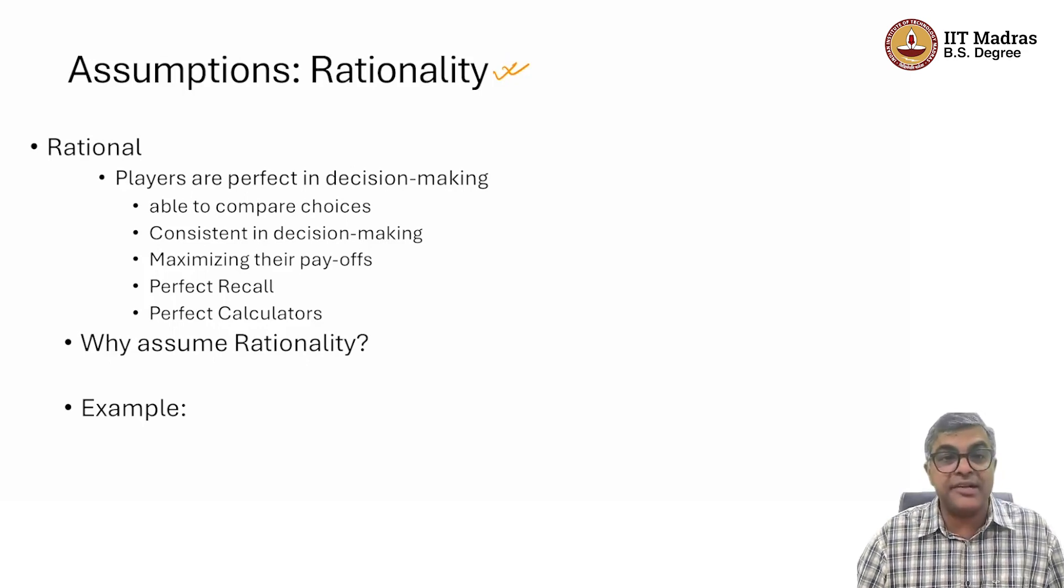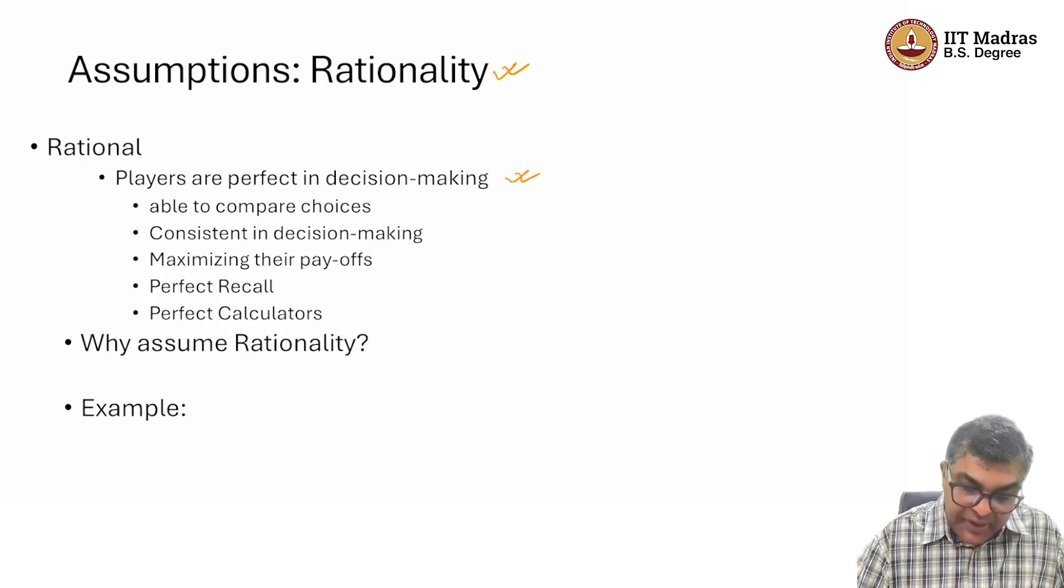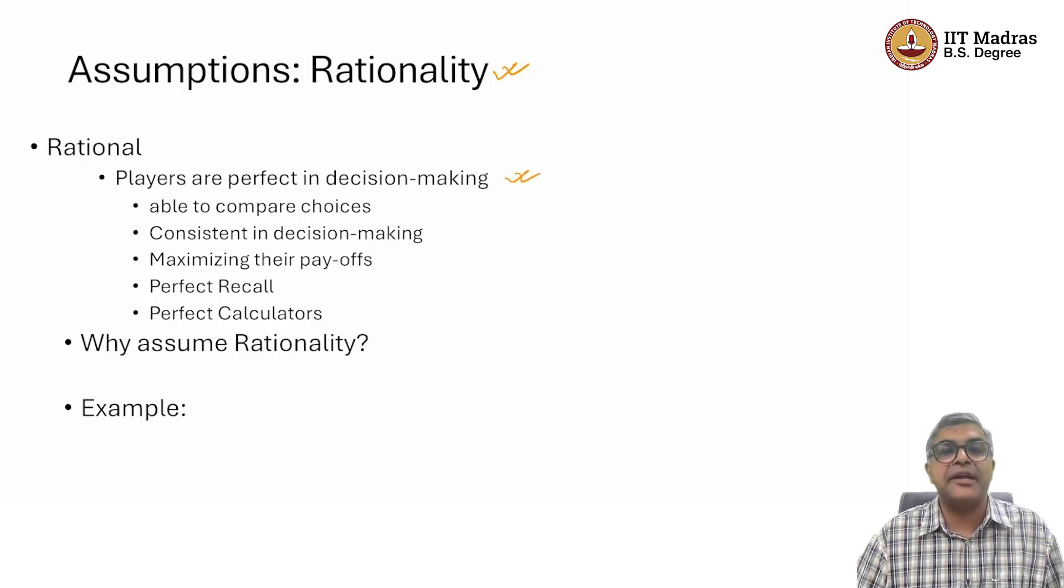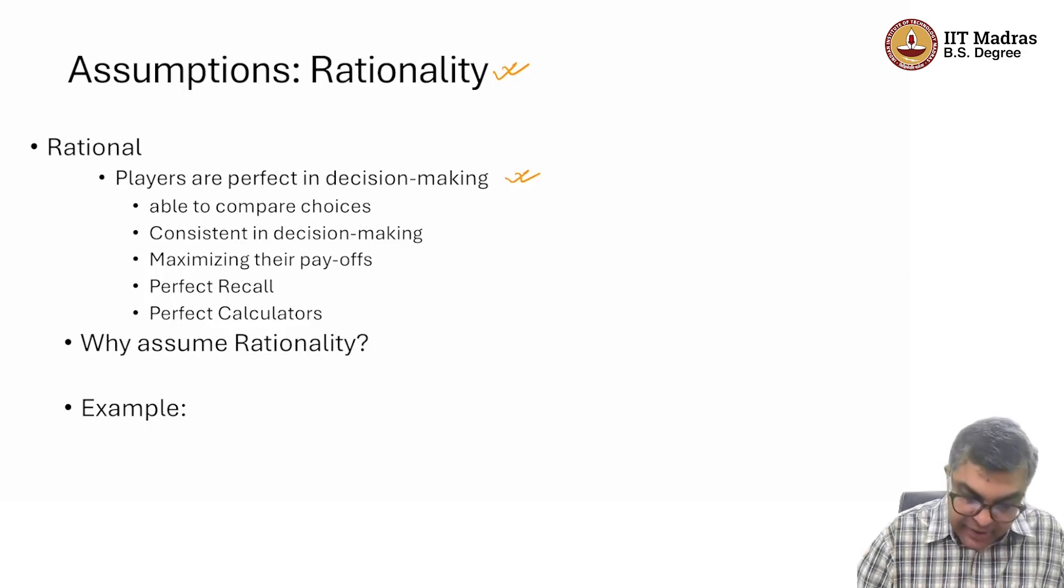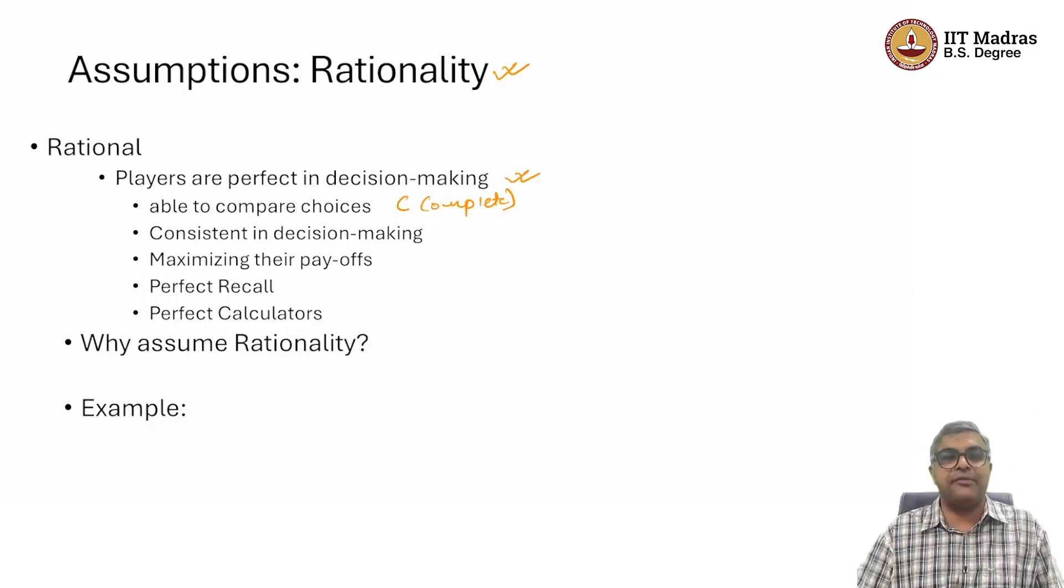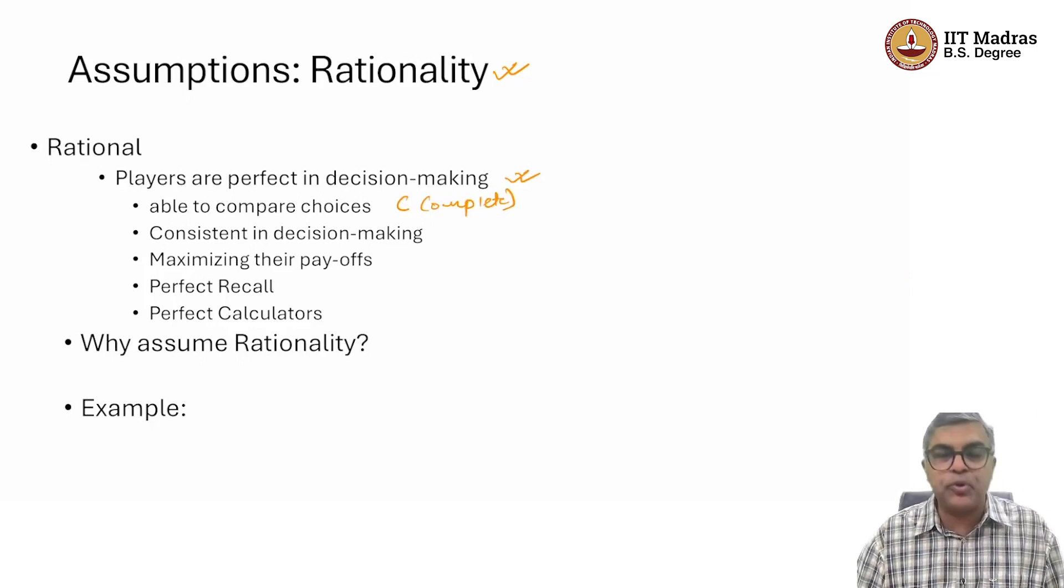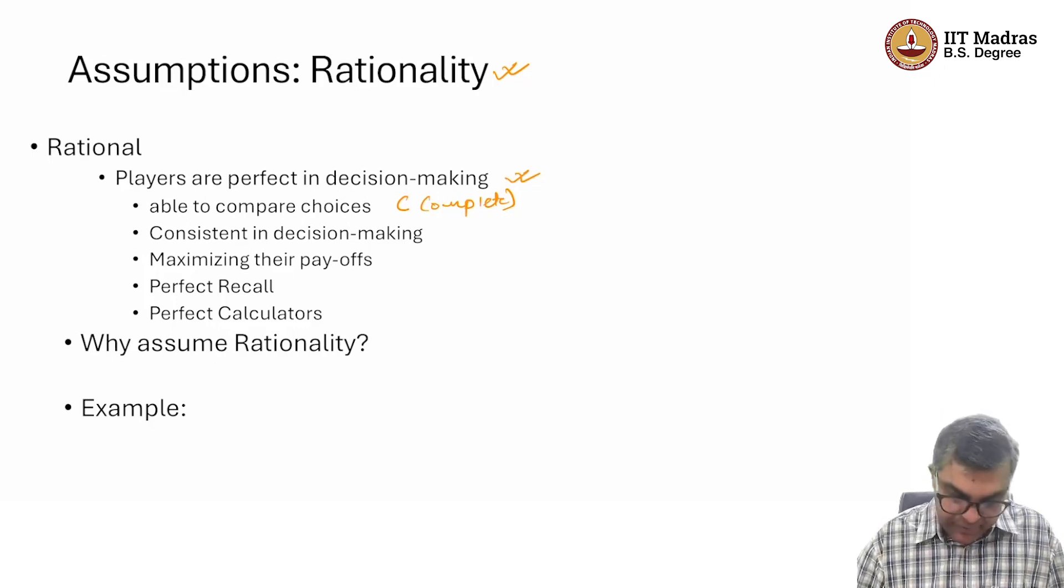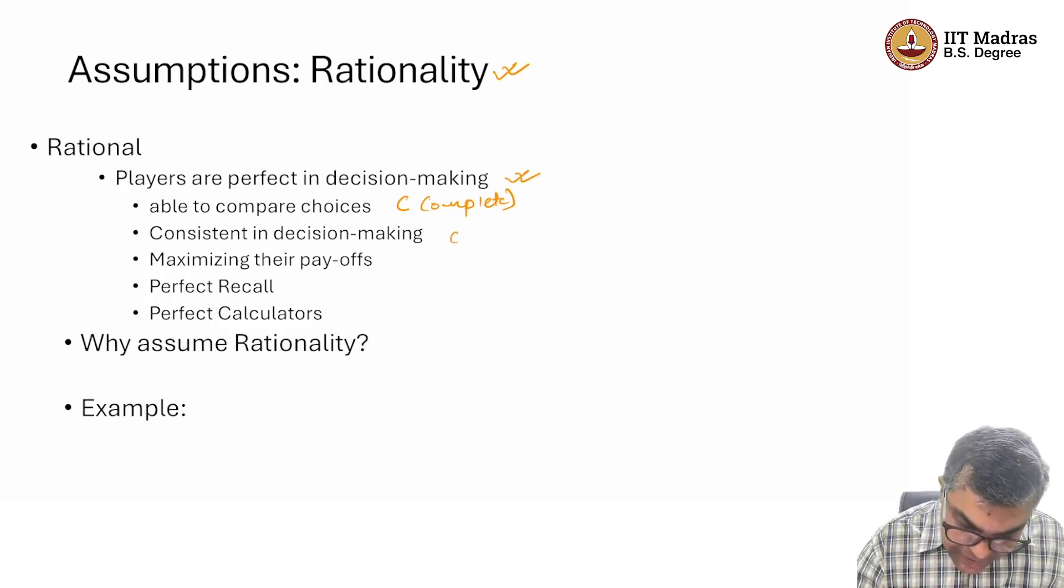One assumption is that we say that players are rational. What is rationality? We already talked about that players are perfect in decision making. It means they are able to compare their choices. So, their preference is complete, that we had discussed earlier. Whenever given an opportunity to compare two options, they are able to compare. Then they are also consistent.